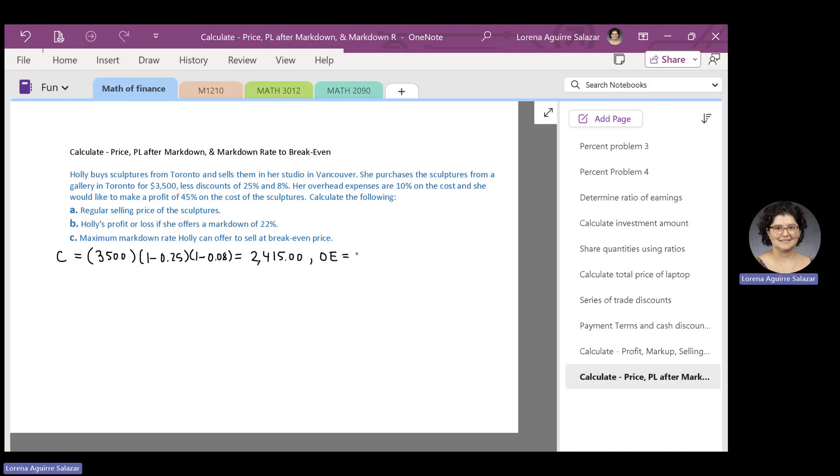Then we multiply 0.1, that's 10% but in decimals, by the cost. And we find that Hoed's overhead expenses equal $241.5 cents. Those are Hoed's overhead expenses.